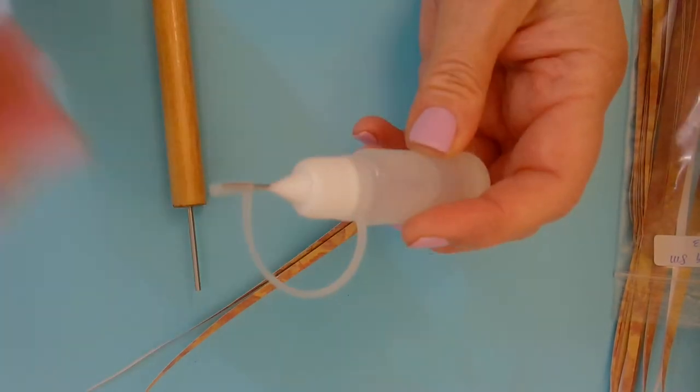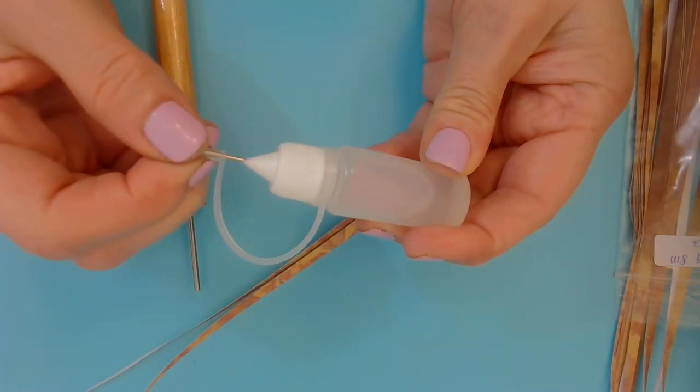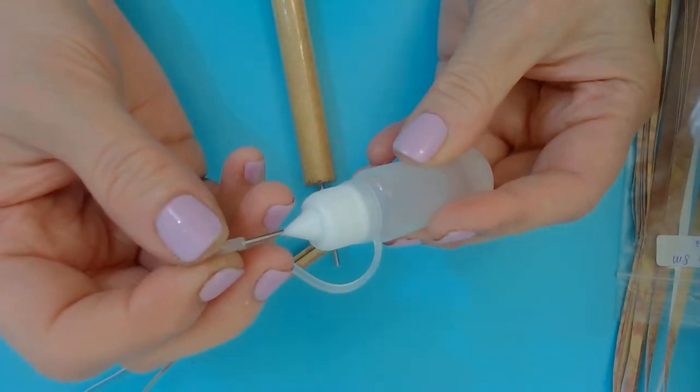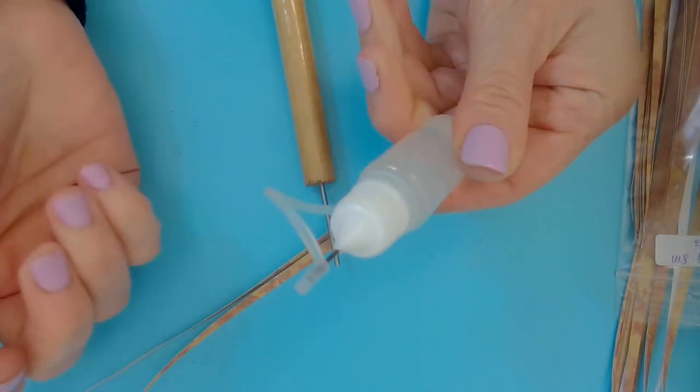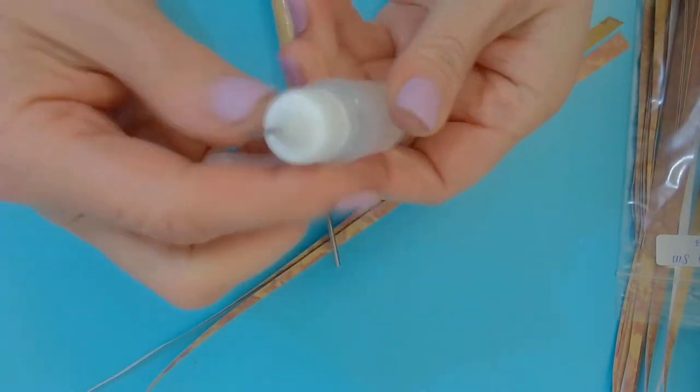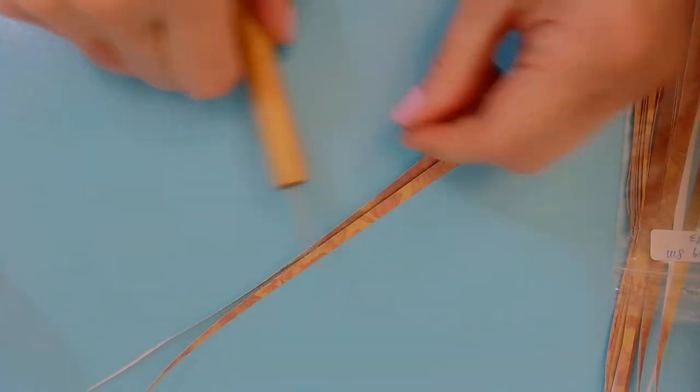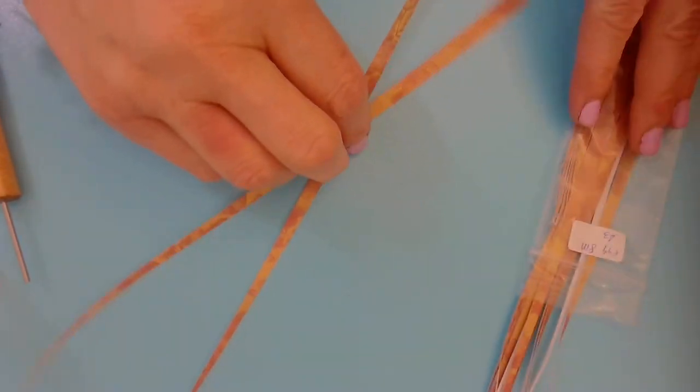Now the one thing I do recommend is keeping your nozzle clear. Use your rubber tips. Keep them when not in use - just place that tip right back on there. You can easily remove this so while you're rolling it doesn't get in your way. And let's get started here.